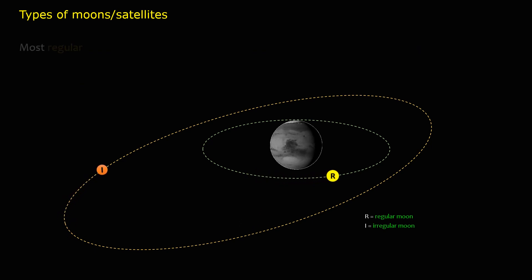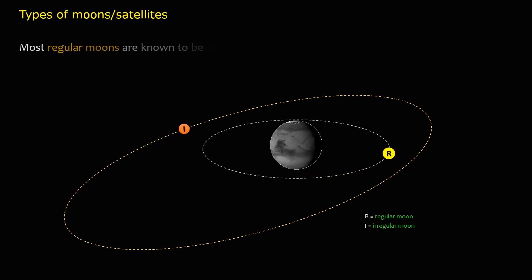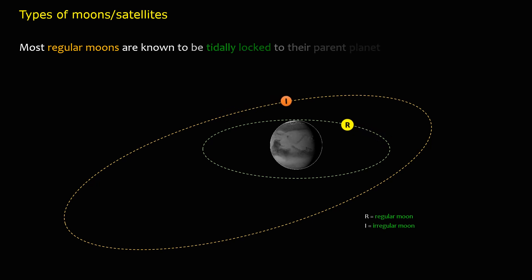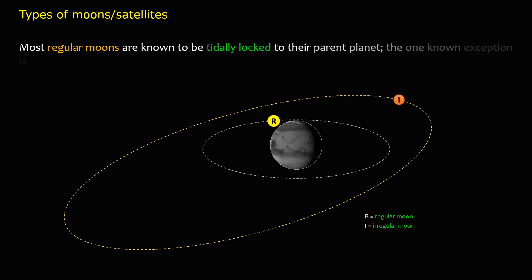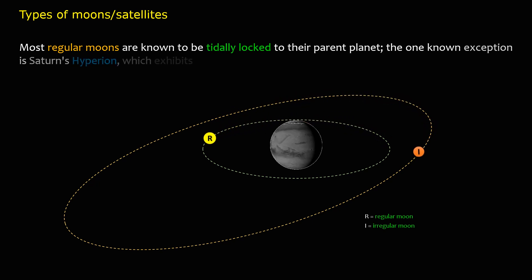Most regular moons are known to be tidally locked to their parent planet. The one known exception is Saturn's Hyperion, which exhibits chaotic rotation.